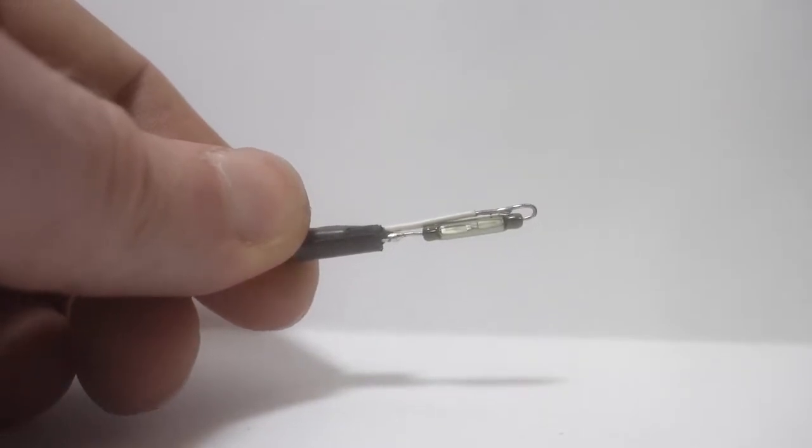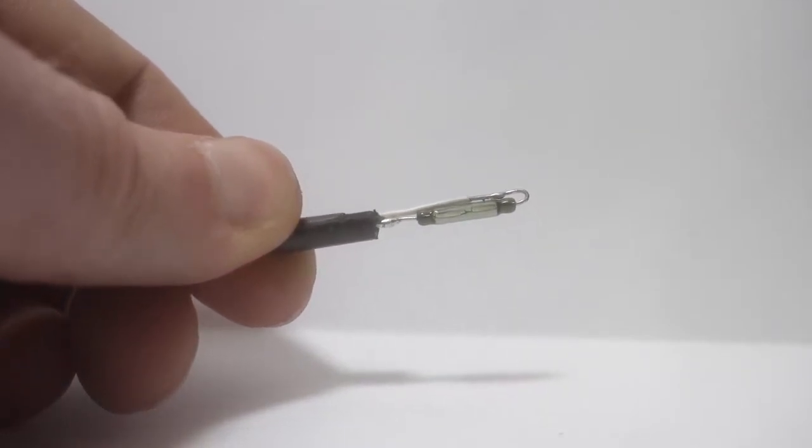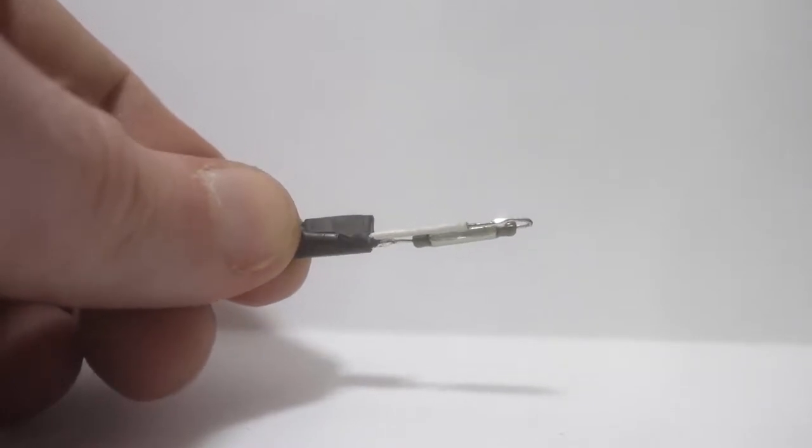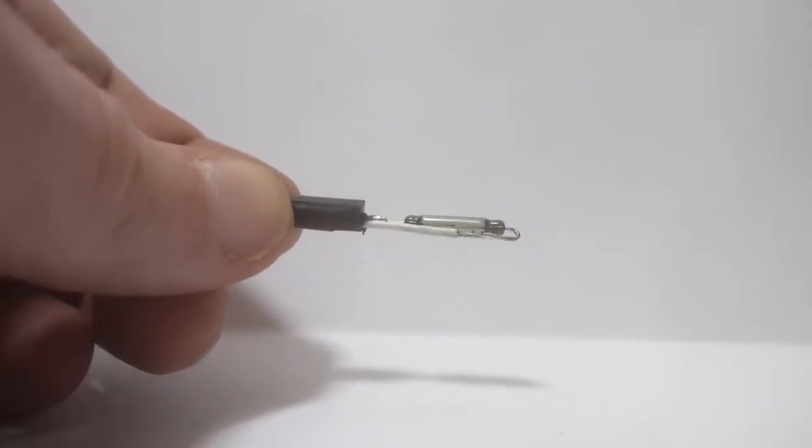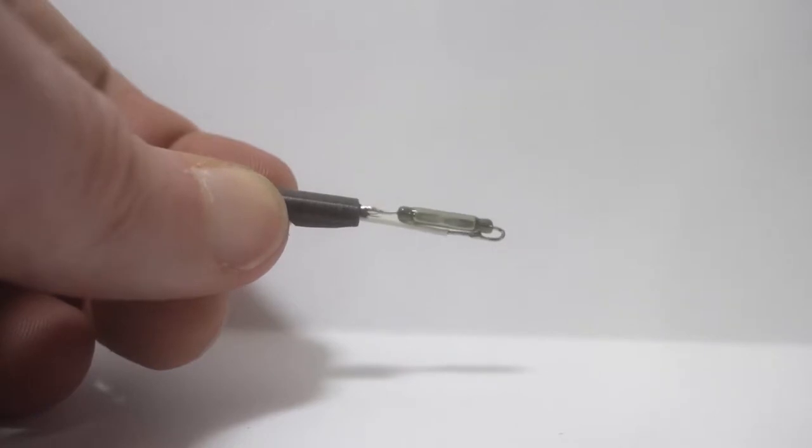When a sufficiently strong magnetic field is present, the gap closes and completes the electrical circuit. This tells the Bail Bandit's onboard computer that a magnet is near the reed switch.